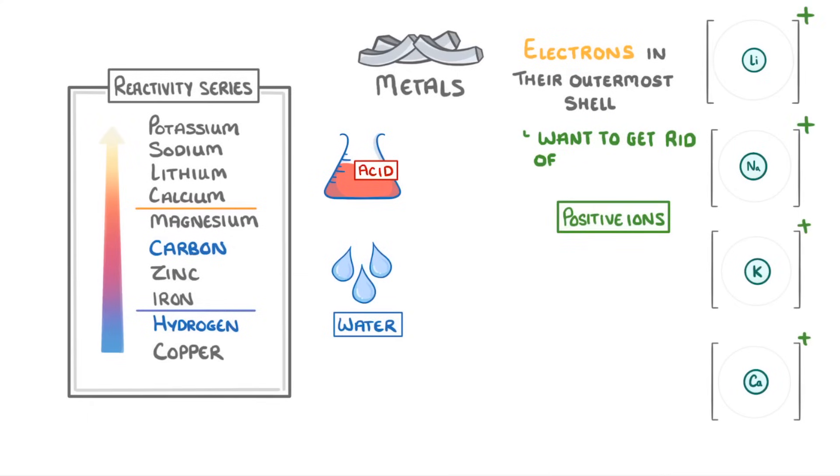So when we talk about the reactivity of a metal, all we mean is how easily it forms these positive ions. The metals that form ions most easily are the most reactive. And by comparing all of the metals, we can arrange them in order of their reactivity like this, which we call the reactivity series.